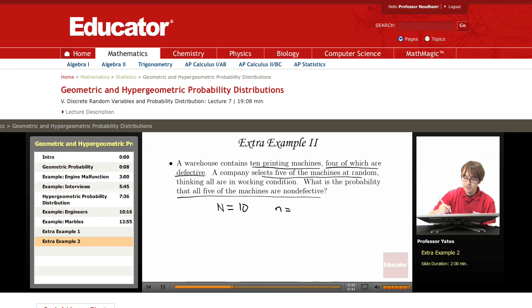n equals 5. We're selecting five machines at random. Four are defective but we are interested in non-defective. So out of these, six are non-defective.